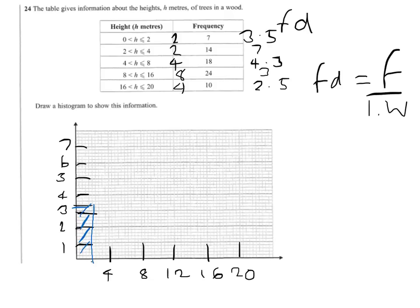14 divided by 2 is 7. So 7 and then down between 2 and 4. So like that and like that. That's not too bad.